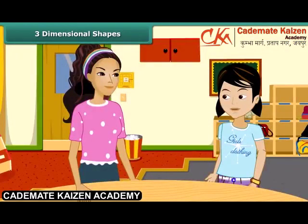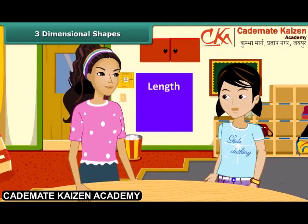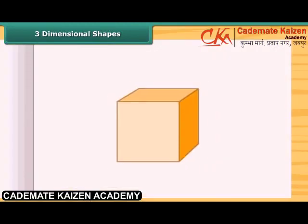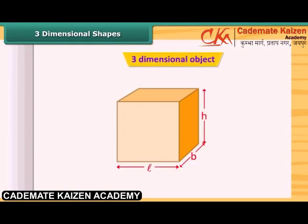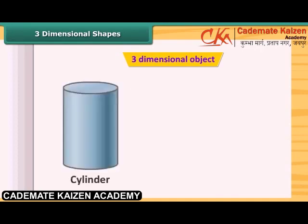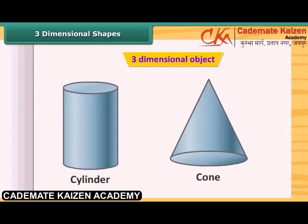What are three-dimensional shapes? A solid object having three measurements like length, breadth and height are called three-dimensional objects. Look at this cuboid — it has length, breadth and height, so this is a three-dimensional object. The cylinder, cone, etc. are also three-dimensional figures.